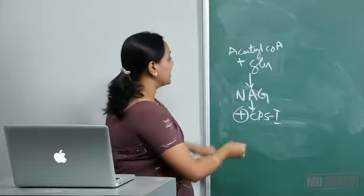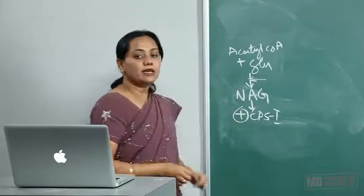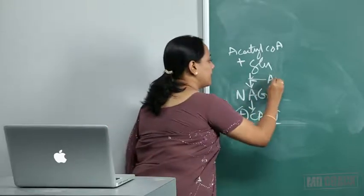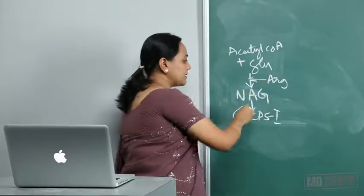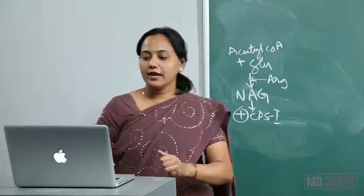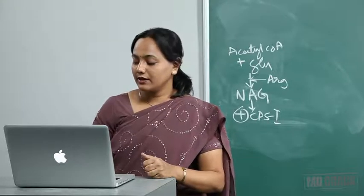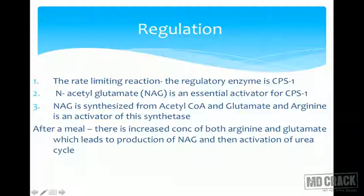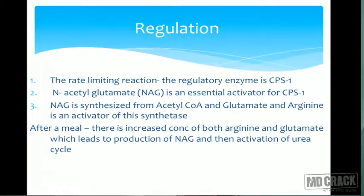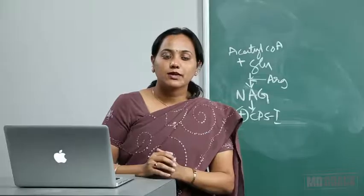After a meal there is increased production of both arginine and glutamate, which leads to increased production of N-acetyl glutamate and activation of the urea cycle. The metabolic defects of the urea cycle will be discussed in the next session.